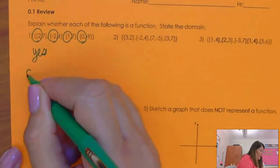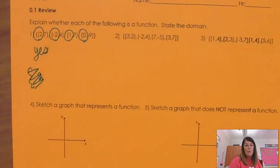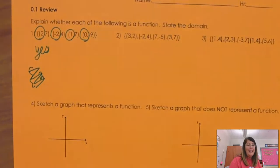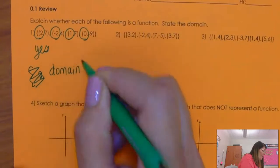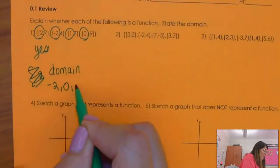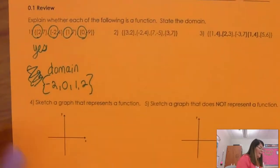Now what is the domain? The domain is, what are my two rules? Put them in order and only list them once if there was more than one. So my domain, if I put them in order, is negative 2, 0, 1, and 2. And I'm going to put it in brackets. That's my domain.